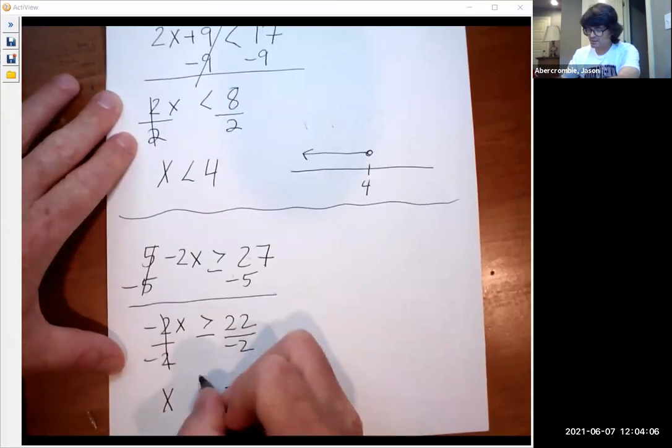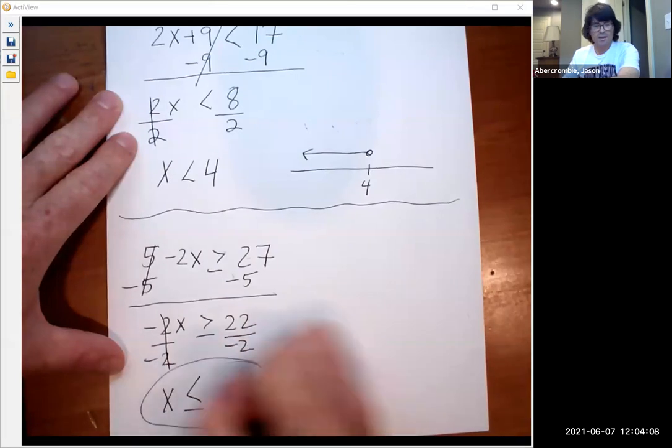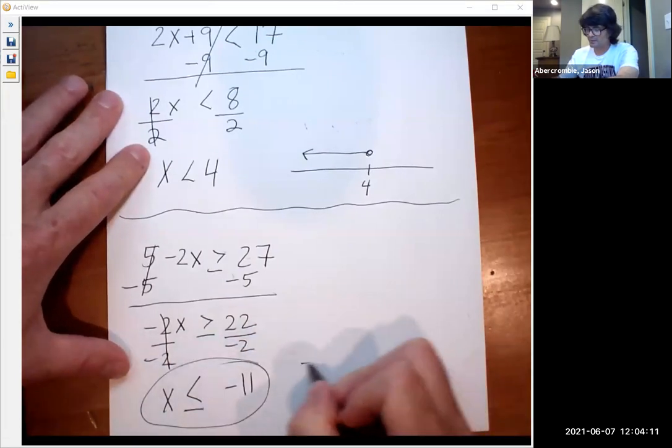Because I divided by negative, watch this. I flip my sign around. And now I have x is less than or equal to negative 11.